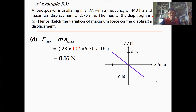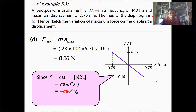The question asks for a graph of how force varies with displacement. The shape of the graph is a straight line with a negative gradient through the origin, and this gradient is constant, given by mass times ω squared. So the graph of force against displacement is similar to the acceleration-displacement graph, except you multiply by mass, in accordance with Newton's second law.